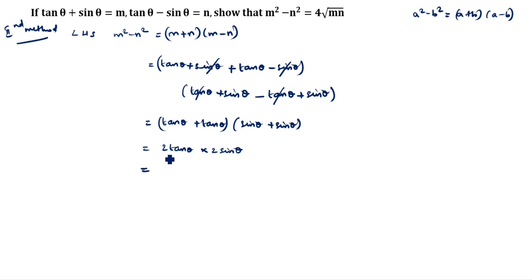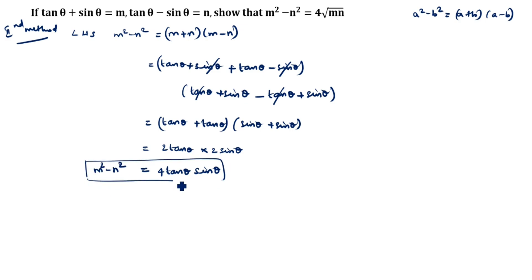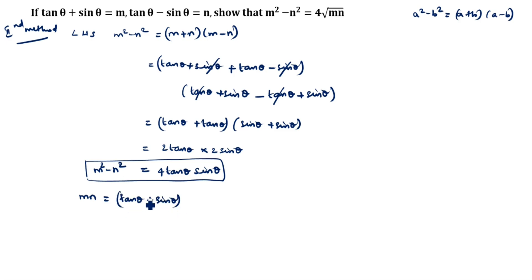So (m + n)(m - n) = 2 tan θ · 2 sin θ = 4 tan θ sin θ. Therefore m² - n² = 4 tan θ sin θ. Now we will find the value of mn. m · n = (tan θ + sin θ)(tan θ - sin θ).